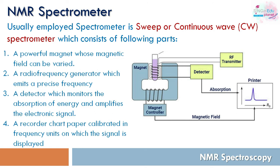In the CW (continuous wave) spectrometer, obtaining an NMR spectrum takes 2 to 5 minutes. But with the FT-NMR spectrometer, the spectrum can be obtained in just 5 seconds, which is a major advantage. However, in our labs we typically use the continuous wave spectrometer, so it is important to know its components.